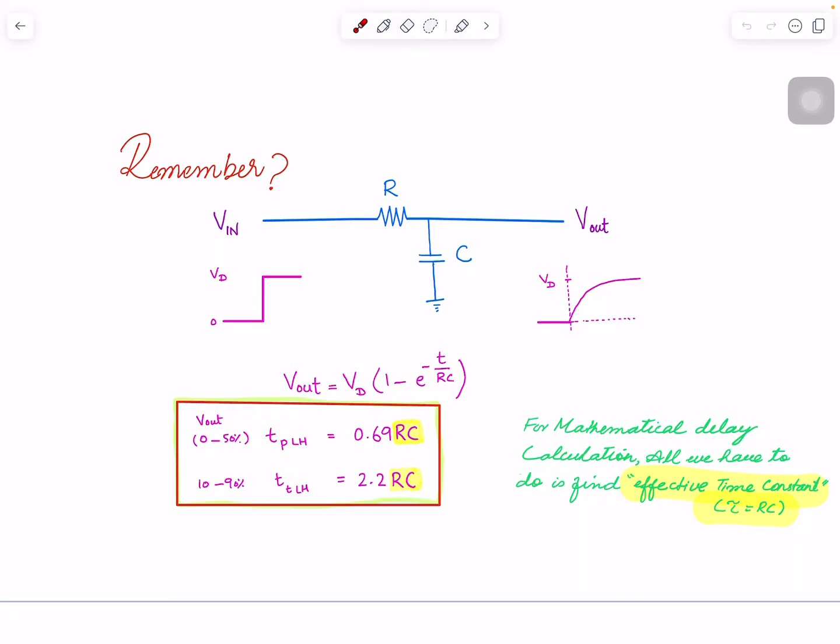We look at the delay - the time it takes for this waveform to reach 50% of the max value or VDD. You should go back and look at those videos if you want to understand how I came up with 0.69.